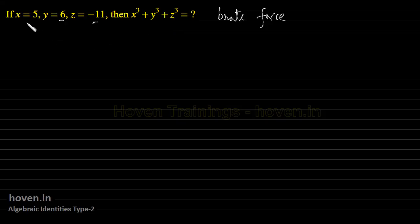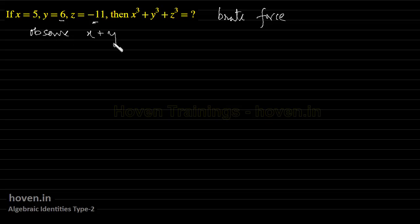In this case, we observe that x plus y plus z will be 0, because 5 plus 6 minus 11 is 0. So this is one observation that we have.